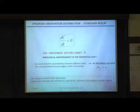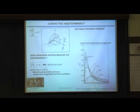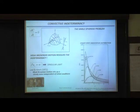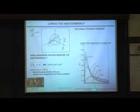Hinch and Leal in the 1970s realized that even weak Brownian motion matters when there is no communication between different Jeffrey orbits. Weak Brownian motion drives a steady-state equilibrium across Jeffrey orbits, leading to a unique distribution. These distributions as a function of C depend on aspect ratio, resolving the indeterminacy and yielding a unique steady-state rheology.